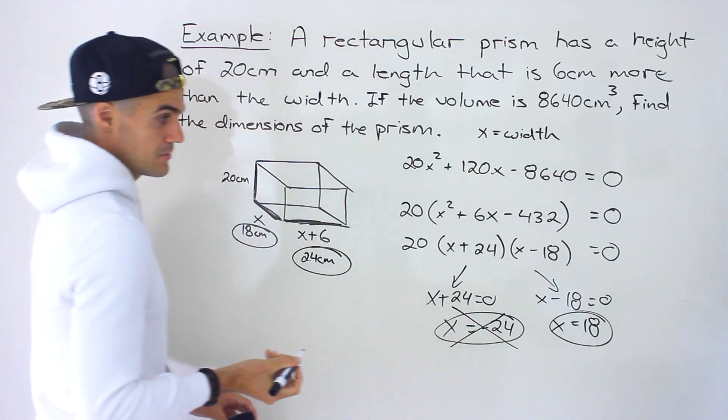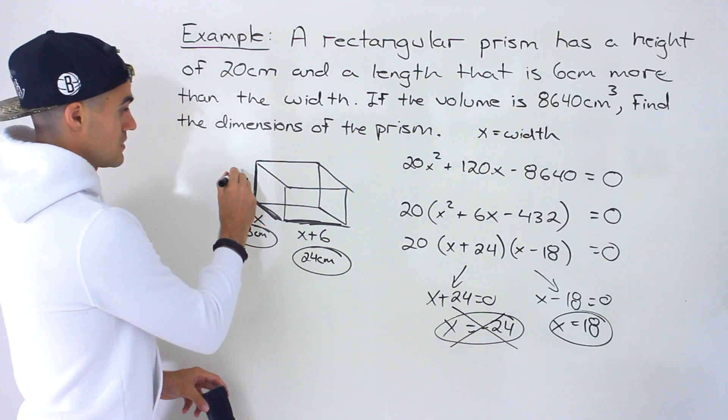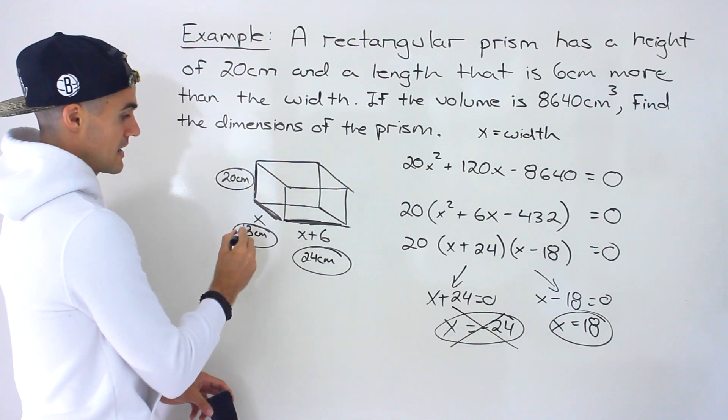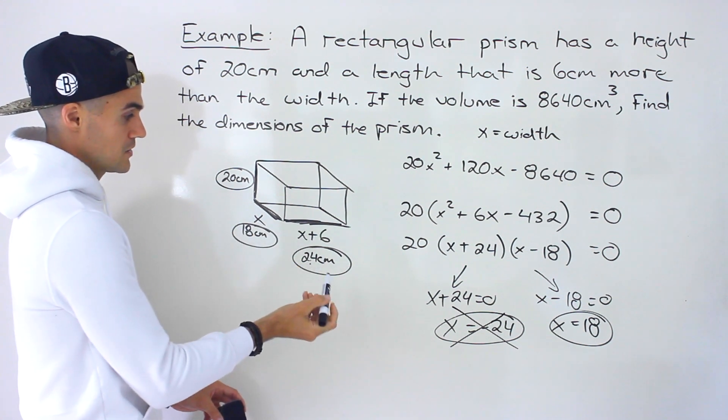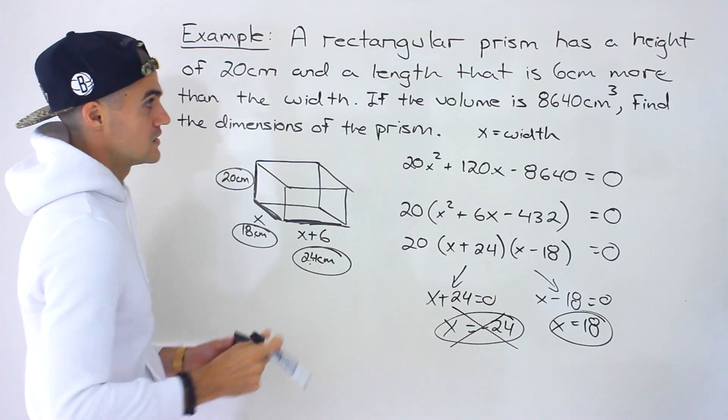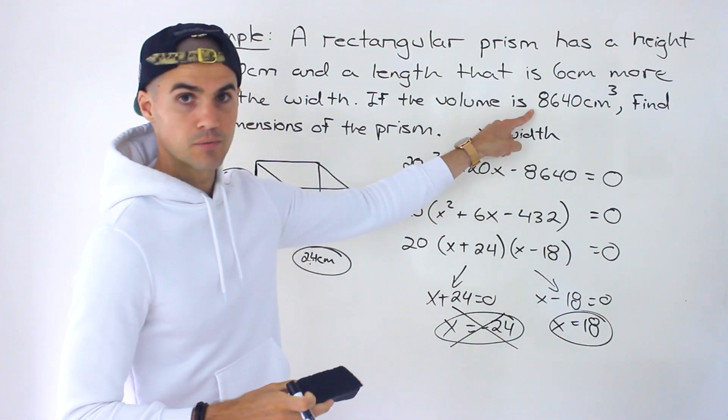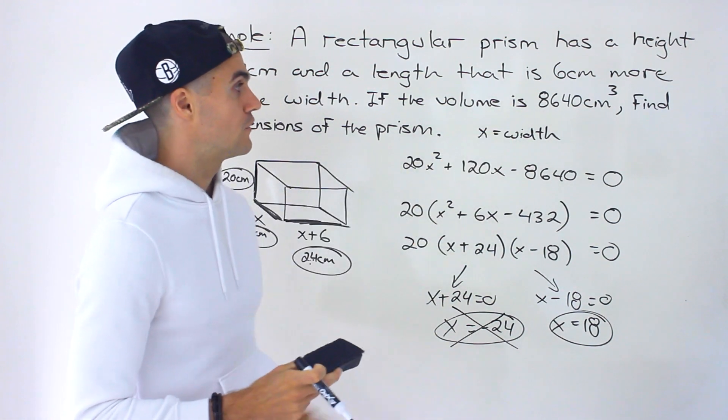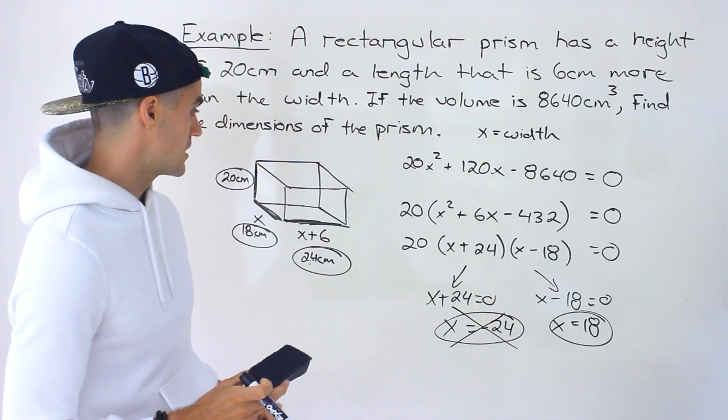That ends up being the final answer. Those are the dimensions: 20 centimeters by 18 centimeters by 24 centimeters. And then if you want to check it, if you would multiply all of these, you'd indeed end up getting that volume of 8,640 centimeters cubed.